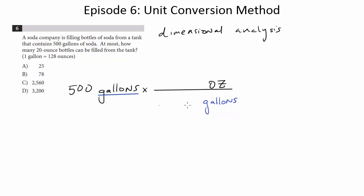Now notice, we need numbers now. And luckily, they provide us with this conversion factor. One gallon is 128 ounces. So we're just going to fill in those numbers. One gallon is 128 ounces.